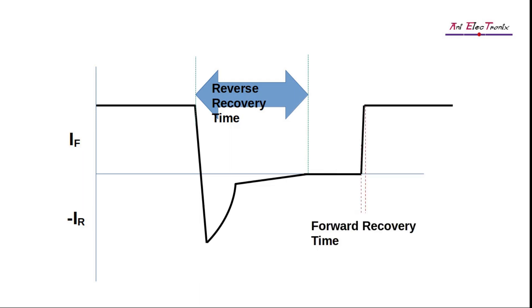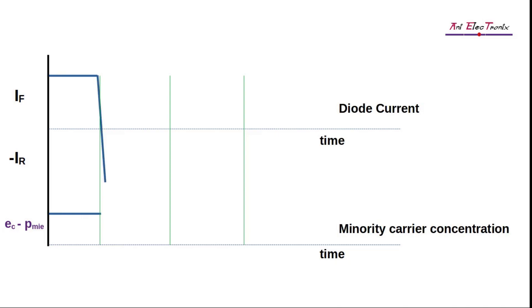Reverse recovery time is the time needed for the diode to change from forward bias to reverse bias. Forward recovery time refers to the time it takes for the diode to change from reverse bias to forward bias. The amount of time during which the diode remains in the conduction state, even if it is reverse biased, is known as storage time. The time required for the device to return to a stable state of reverse bias, i.e., back to non-conduction, is called the transition time.